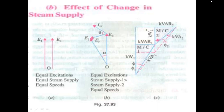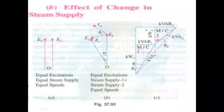This is possible only when alternator one's rotor advances its angular position with respect to alternator two. In figure 37.93, if the rotor of alternator one makes an advanced angular position relative to alternator two, then E1 — the EMF voltage of alternator one — will also get advanced. E1 will be advanced ahead of E2 by an angle alpha.